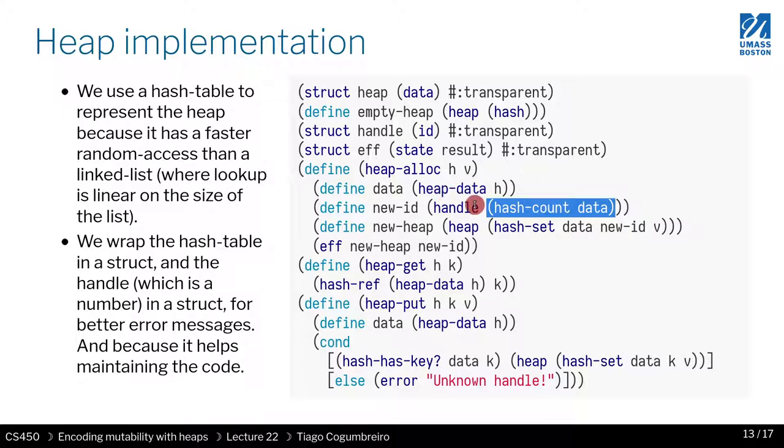What we're doing is basically whenever you allocate, you are getting the following element, which can be very simply computed using the function hash-count, which returns how many elements are in the hash table.